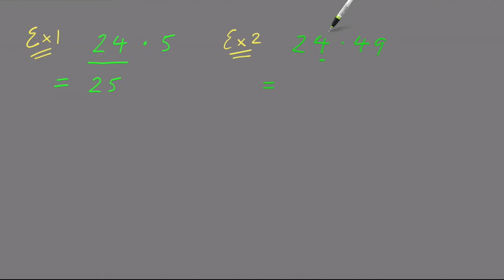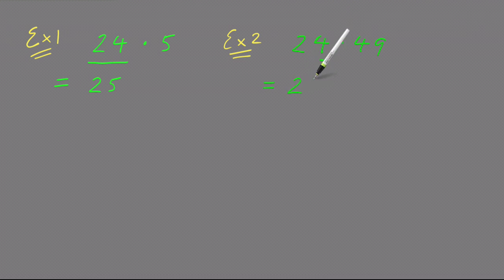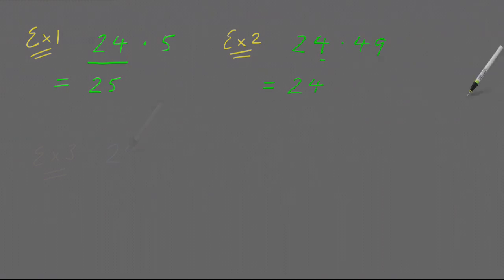It's only the digit immediately to the right of the four that is important. That digit is a four, and because it's not five or more, the four in the units column stays the same. So to the nearest whole number, 24.49 is equal to 24.